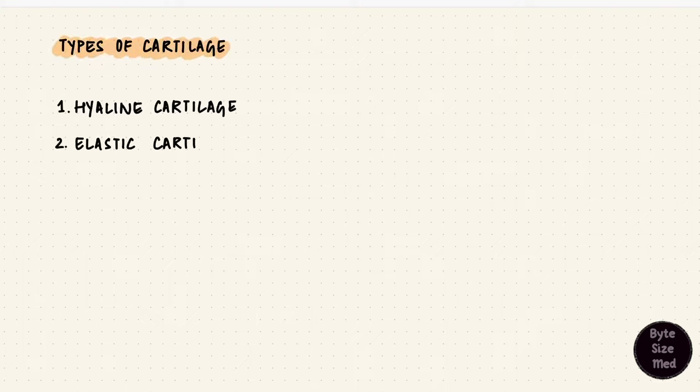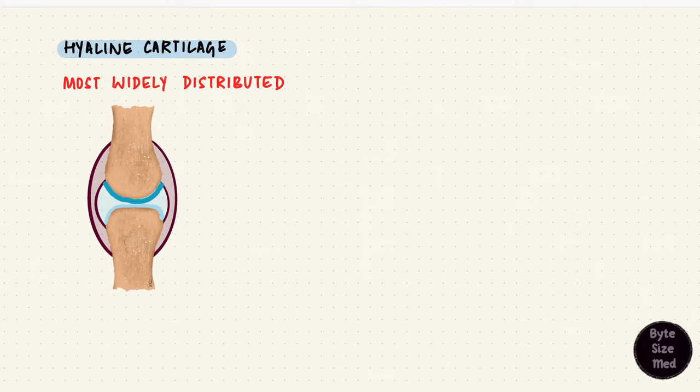Hyaline, elastic, and fibrocartilage. Hyaline cartilage is the most common, and the most widely distributed. Most cartilage in the body that we talk about is actually hyaline cartilage.